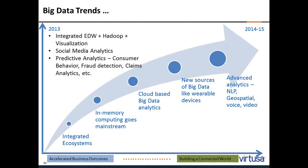What are the trends we are seeing? On slide 13, talking about what has happened so far and what we can expect going forward: we have seen integrated enterprise data warehouse plus Hadoop plus data visualization — that has been the norm. We have also seen a lot of social media analytics and predictive analytics, which is the end result of all this big data work, in areas like customer behavior, fraud detection, claims, and things like that.